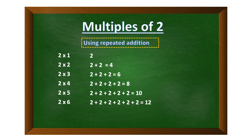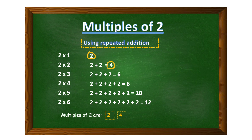Two plus two is four. Two plus two plus two is six. Adding two four times gives eight. Adding two five times gives ten. Adding two six times gives twelve. So the multiples of two are: two, four, six, eight, ten, twelve, and so on.